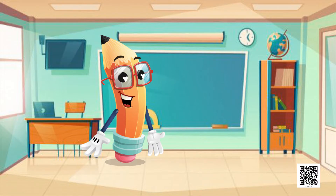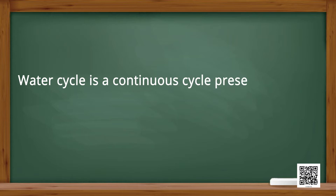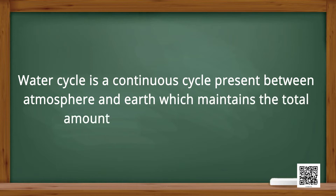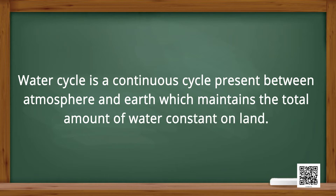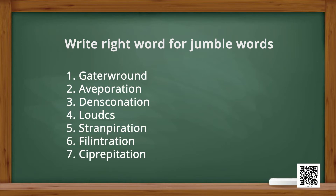Now let us discuss about the water cycle. The water cycle is a continuous cycle between the atmosphere and earth, which maintains the total amount of water constant on land. Some processes involved in the water cycle are written here and labelled by numbers.